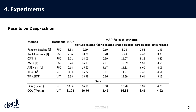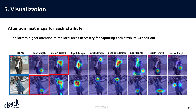We achieved consistent performance across the board. The heat maps provide a clear visualization of how the model identifies specific areas relevant to each attribute. This serves as evidence that CCA effectively integrates attribute information with the image, enhancing the retrieval process.